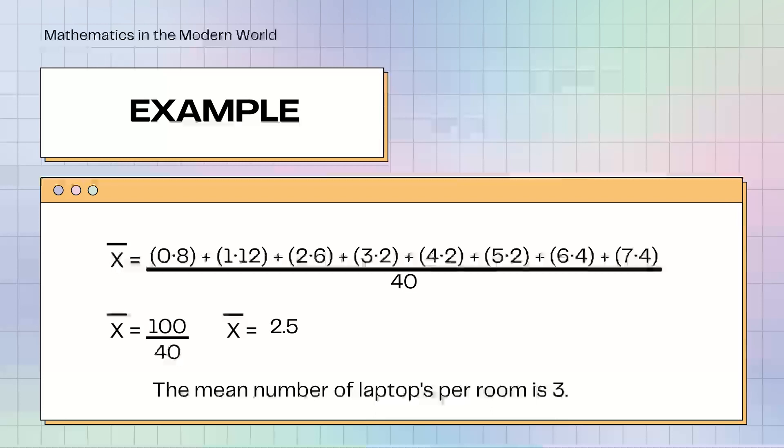After we use the frequency distribution, gagamitin naman natin yung weighted mean. We will times the number of laptops to the number of rooms: 0 x 8 plus 1 x 12 plus 2 x 6 plus 3 x 2 plus 4 x 2 plus 5 x 2 plus 6 x 4 plus 7 x 4 over 40. It will be 100 over 40 equals 2.5. The mean number of laptops per room is 3. Kasi, ni-round off ko na siya.